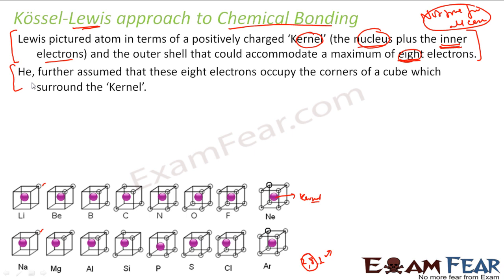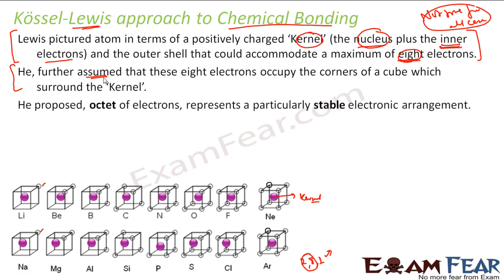Actually, in the quantum model, electrons keep jumping around — there is no fixed cube or cuboid shape. But this theory proposed that, just to understand chemical bonding, let's assume this scenario. It's all assumption. He also proposed the octet of electrons — that is, eight electrons in the outermost shell — represents a stable electronic configuration. Why? Because all noble gases like neon and argon have eight electrons in the outermost shell and they are stable. So he assumed that having eight electrons in the outermost shell means you attain stable electronic configuration.